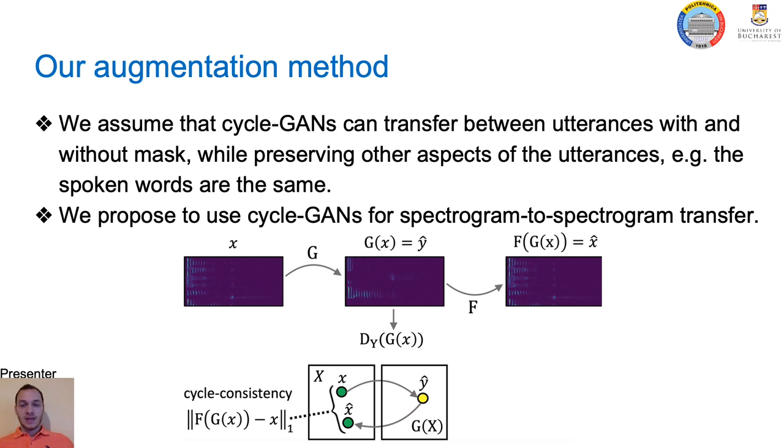The spectrogram X with mask is translated using the generator G into Y-hat to make it seem that Y-hat was produced by a speaker not wearing a mask. The spectrogram Y-hat is translated back to the original domain X through the generator F. The generator G is optimized to fool the discriminator DY, while the discriminator DY is optimized to separate generated samples without mask from real samples without mask in an adversarial fashion. In addition, the GAN is optimized with respect to the reconstruction error computed between the original spectrogram X and the spectrogram X-hat. Adding the reconstruction error to the overall loss function ensures the cycle consistency.